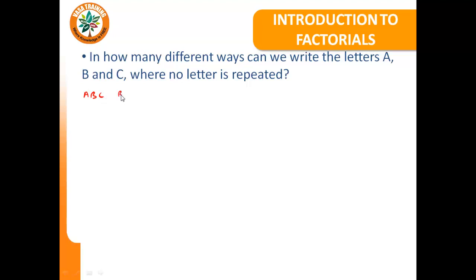We've got B, A, C. A, C, B. B, C, A. C, A, B. And finally we've got C, B, A. So we've got six ways of writing A, B, C where no letter is repeated.